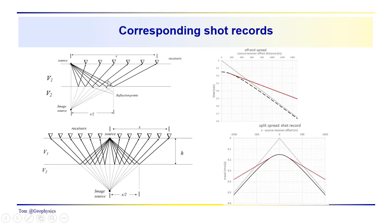So here we're just looking at the time distance response for the off-end source receiver arrangement. We've looked at this before. So this is nothing new. We have a direct arrival array which travels out along the surface. So that gives us this direct arrival which is linear and has a slope which is equal to the reciprocal of the velocity in this medium, V1.